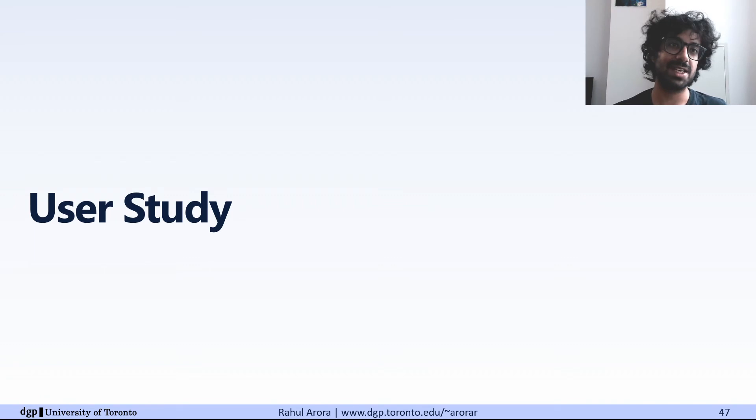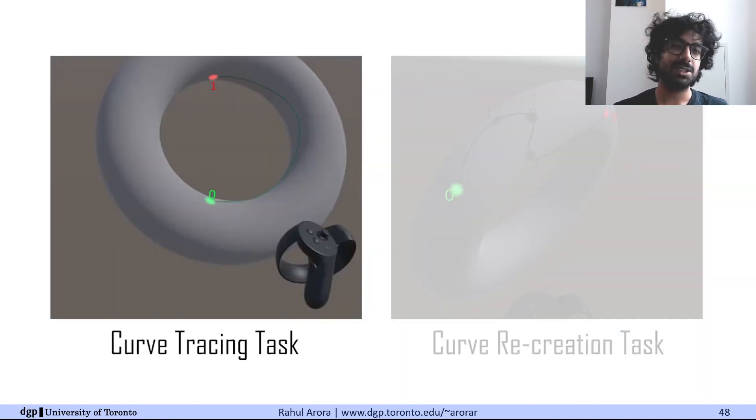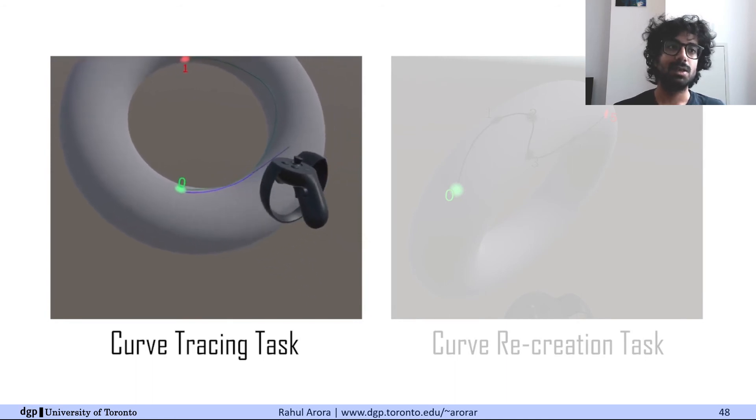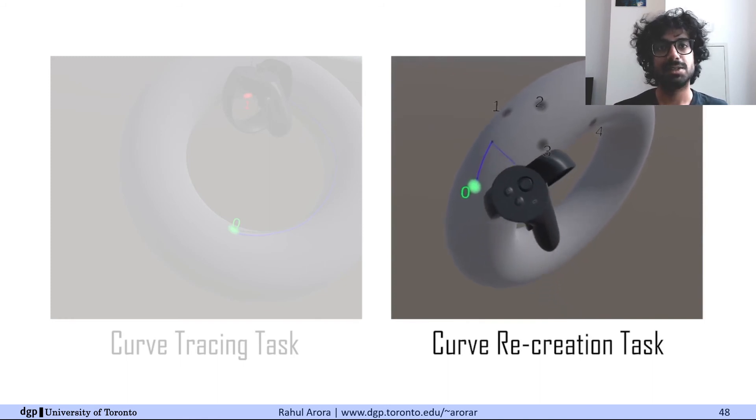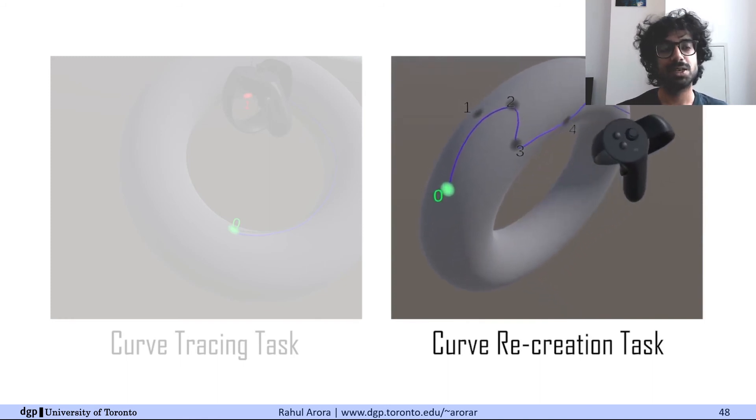Once we had the technique, we tested it with a user study. In the study, we compared stroke mimicry to spray can, which was the most promising context-free projection. We designed two tasks for the study. A tracing task, where a curve was shown to the participant and they had to trace it out. And a more realistic scenario, which we call the recreation task. In this task, they are shown the curve along with some key points on it. As soon as they start to draw, the curve disappears, but the key points stay visible. These points are chosen such that the task amounts to drawing the simplest smooth curve through the key points.